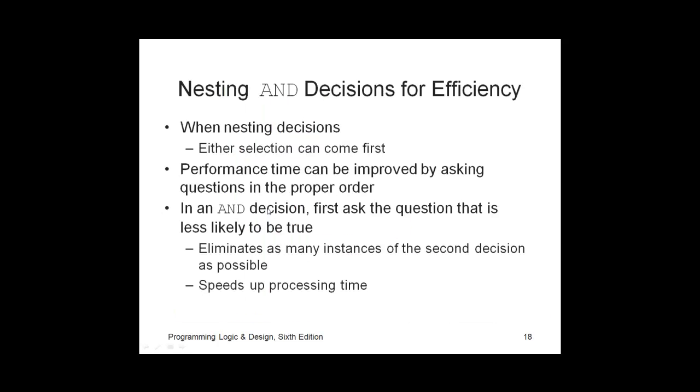For efficiency, now when you're nesting decisions, if you're using AND logic, technically it doesn't really matter which question comes first. Number of calls made or number of minutes? They both have to be true, so does it really matter which one is asked first? Technically, no. However, performance might be improved if you ask the questions in a proper order. When thinking about AND decision, you want to first ask the question that is less likely to be true.